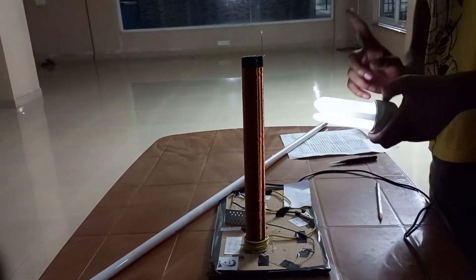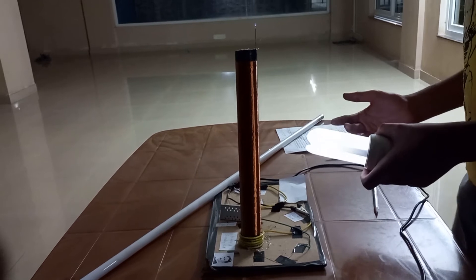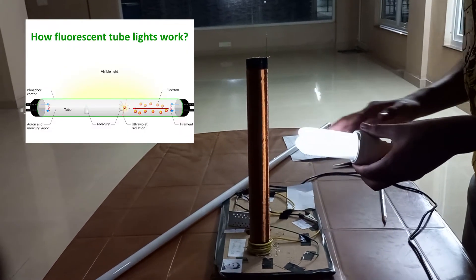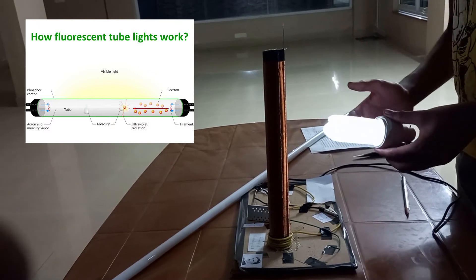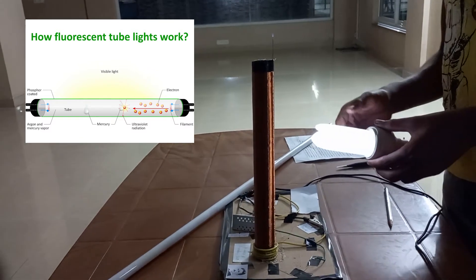The reason the bulb glows is that the mercury vapour present inside the bulb gets excited by the electromagnetic field, hence the bulb glows.